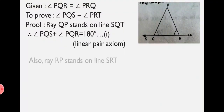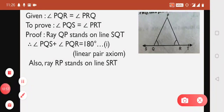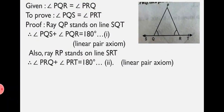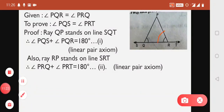Again, another ray also stands on line ST. Ray RP stands on line SRT. Again, two angles form a straight line making 180 degrees by the Linear Pair Axiom. So we write Angle PRQ plus Angle PRT equals 180 degrees. We label this as equation number 2.